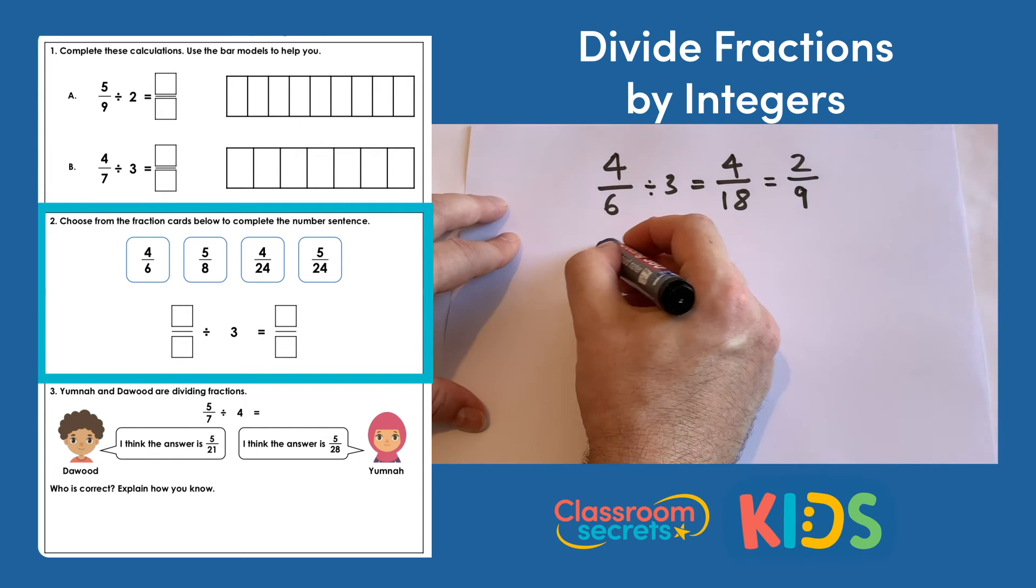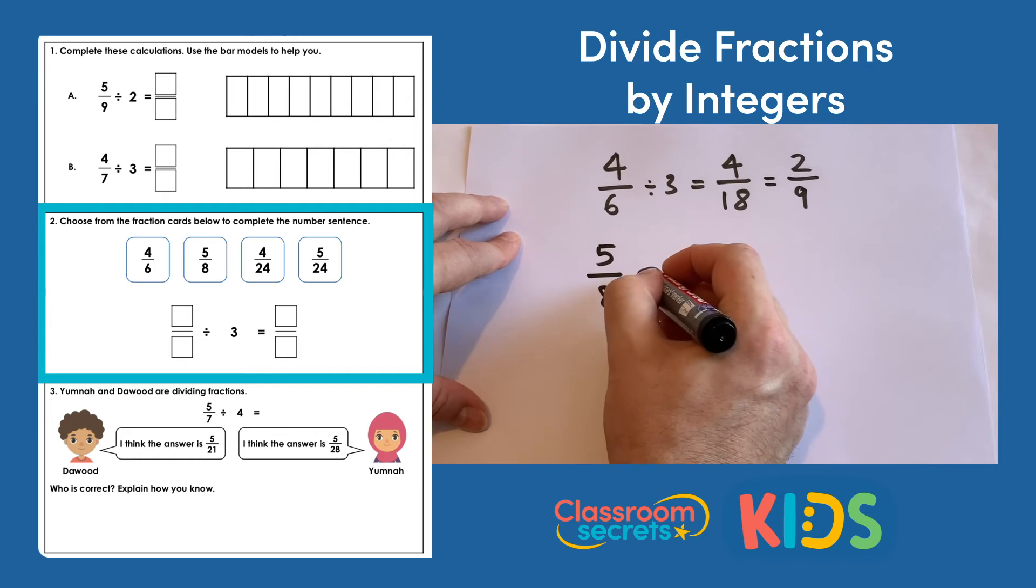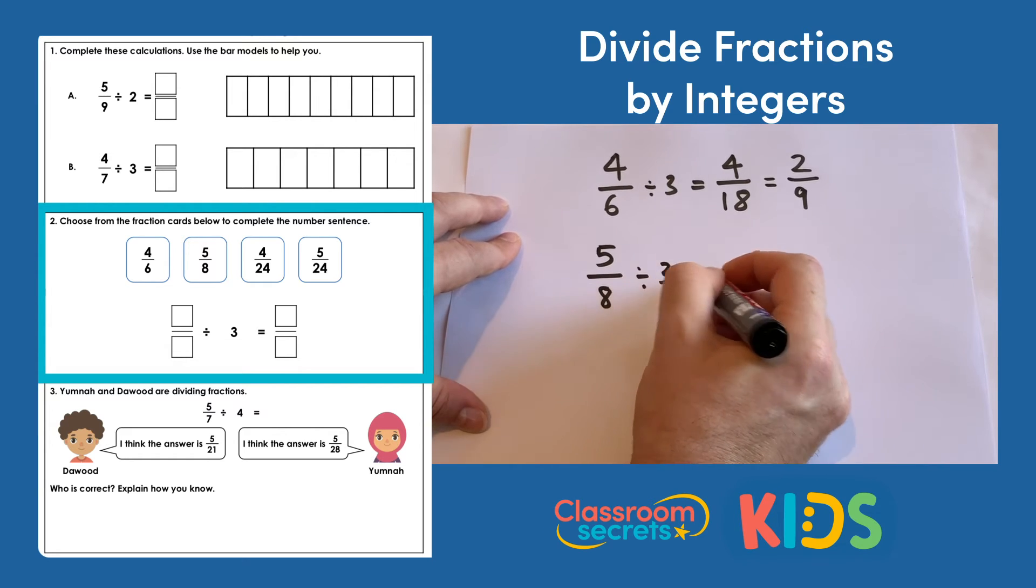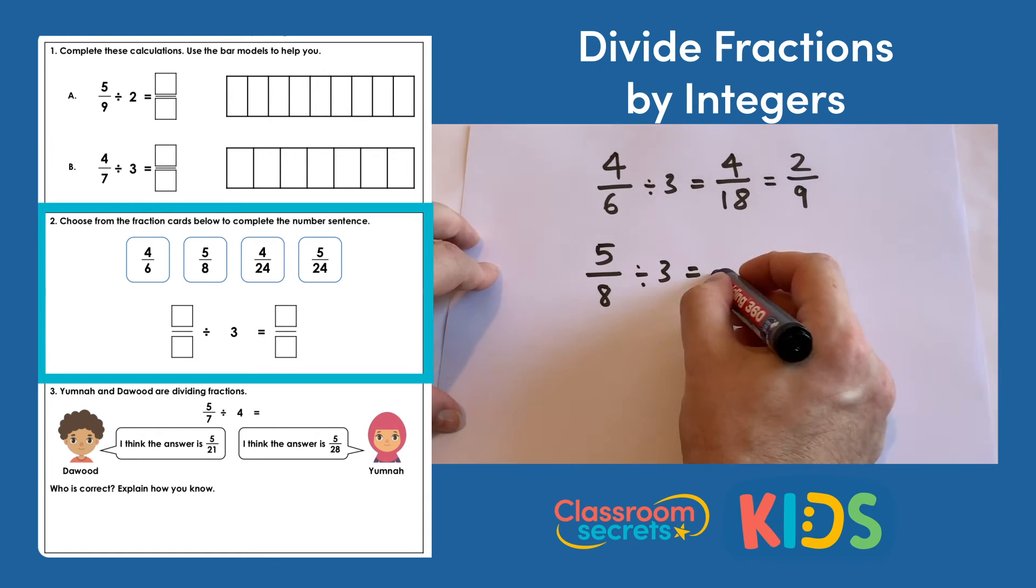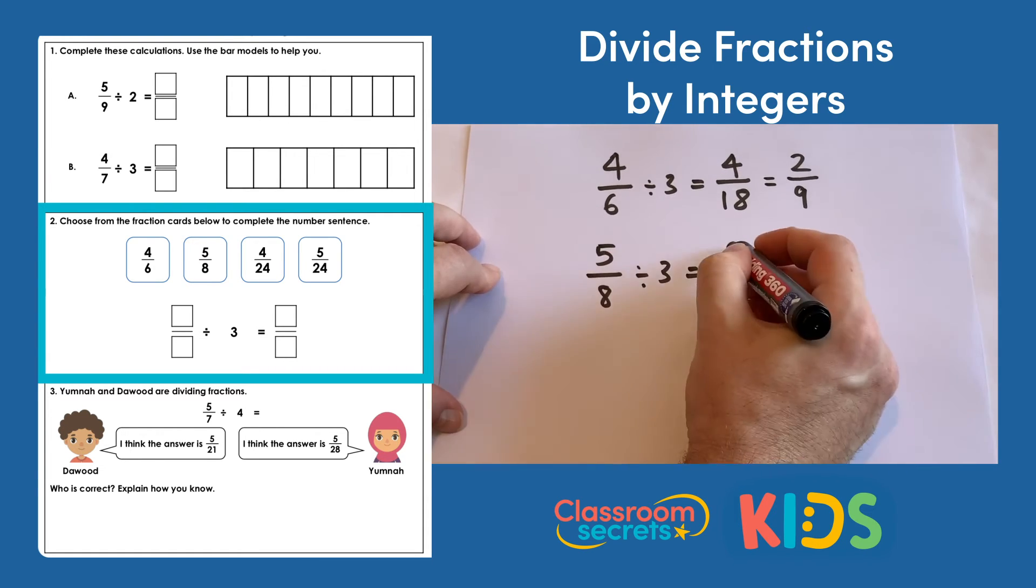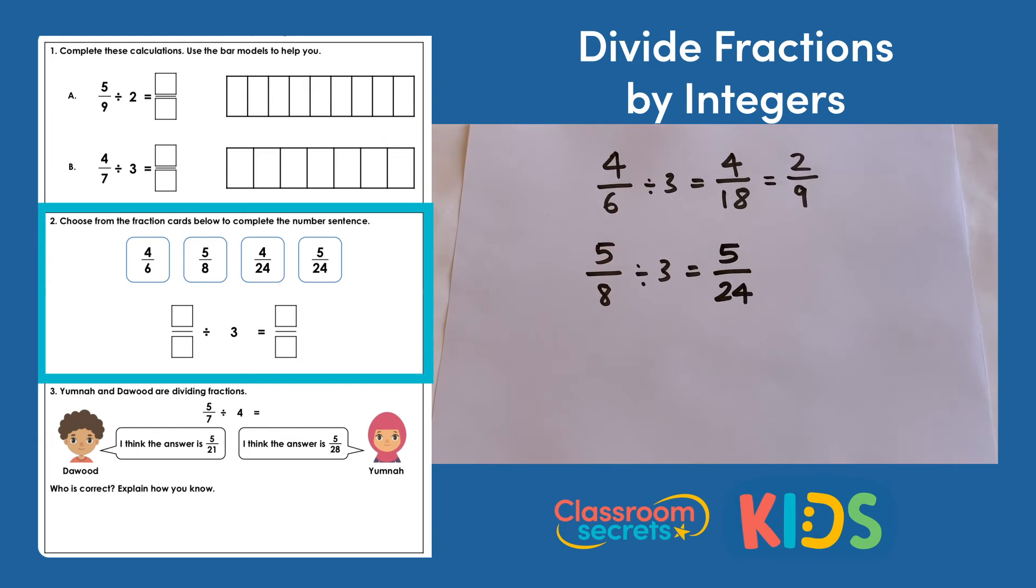So the next one then is 5 eighths. So 5 eighths divided by 3. So we'll be splitting each of the eighths into 3 equal parts. So all together there we'd have 24 equal parts. So we're talking about 5 of them. So that'll be 5 twenty-fourths. And we do have that as one of our fraction cards there. So the two fraction cards we can choose would be the 5 eighths and the 5 twenty-fourths.